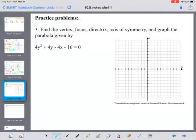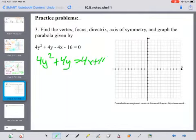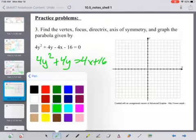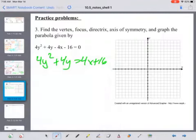Number 3. This tells me it's y squared. So we're going to open up to the left or to the right here. First thing is I'm going to move my negative 4x and 16 to the other side. And then if I factor out my 4 there on the left.